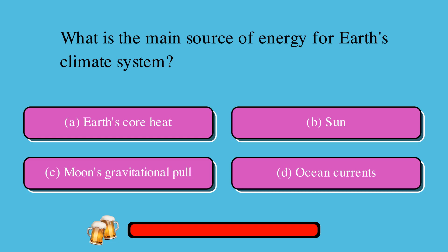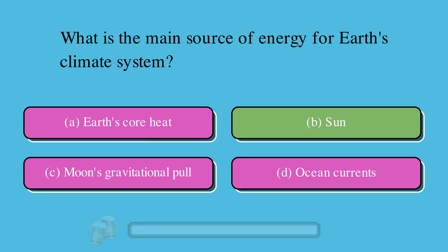What is the main source of energy for Earth's climate system? A. Earth's core heat, B. Sun, C. Moon's gravitational pull, or D. Ocean currents? The correct answer is B. Sun.